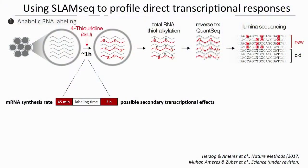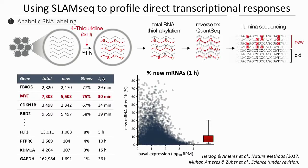How can we use SLAM-Seq to fix this? We approached this in collaboration with the lab of Johannes Zuber at the Institute of Molecular Pathology at the IMP, who optimized an anabolic RNA labeling approach. Upon drug treatment, we wait for the full extent of the drug response to take place, then apply a short 4-thiouridine labeling time — long enough to detect de novo transcription but short enough to avoid secondary transcription effects. Under unperturbed conditions, this enables us to look at more than 6,000 genes in terms of their transcriptional output. These genes vary dramatically in half-life, from a very stable 36 hours down to less than half an hour. For example, the prominent oncogene MYC has a very short half-life, illustrating the problem I mentioned.